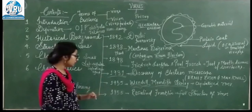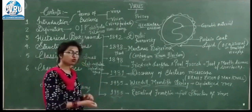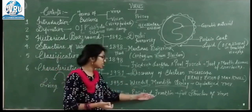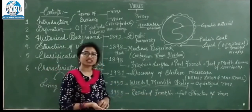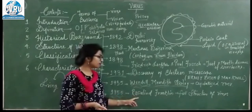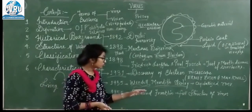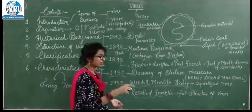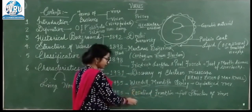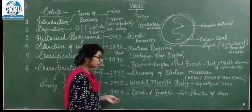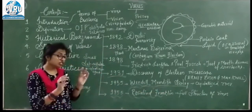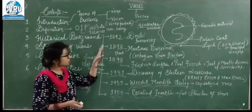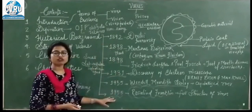In the year 1955, among the pioneer scientists, remember the name of Rosalind Franklin. She had earlier used X-ray crystallography to draw the DNA double helix structure. Similarly, Rosalind Franklin elucidated the complete structure of the virus. That was all about the historical background of viruses.